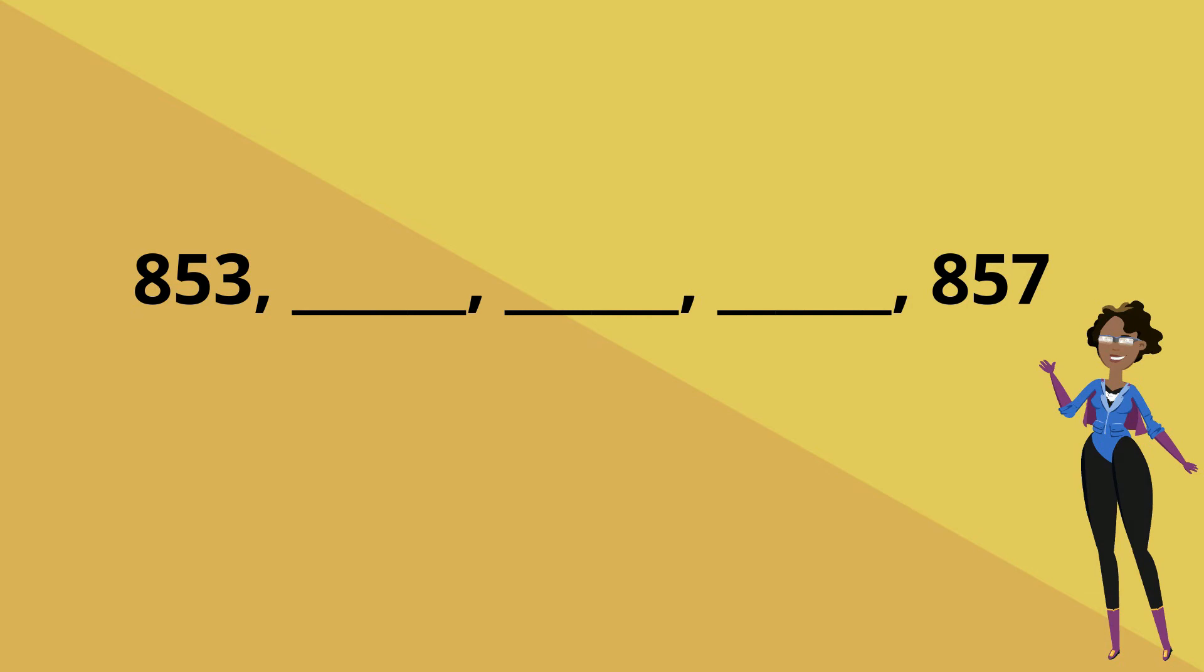That's right, 854. What about right after 854? Correct! 855. And after 855, we have 856. Sequence completed! Well done!